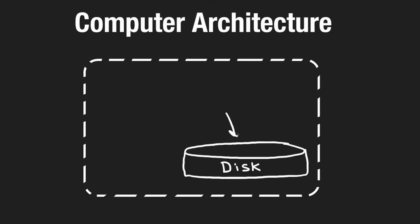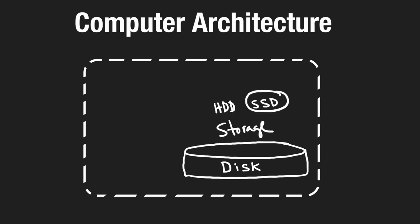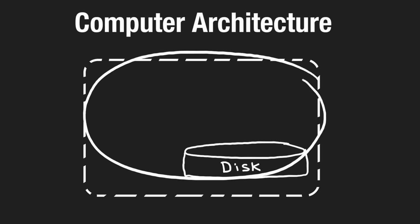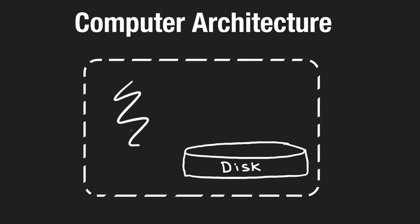Let's first start with our disk — also referred to as storage, hard drive, or HDD, which stands for hard disk drive. Nowadays, it's more common to use an SSD rather than an HDD because they're generally faster. The key idea is that the disk stores all of our data persistently — even if our computer restarts or crashes while executing code, the data stored on disk is preserved.